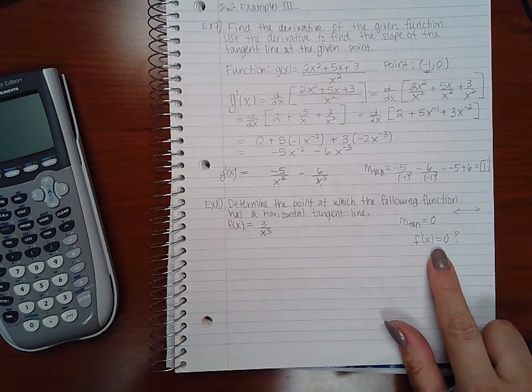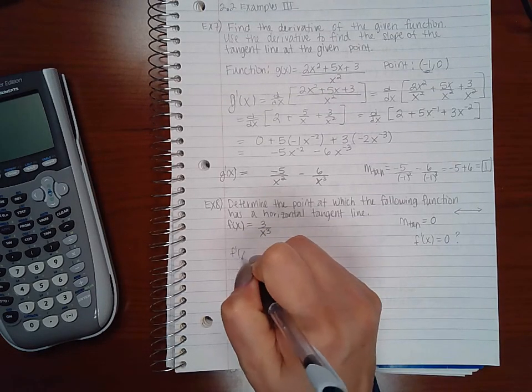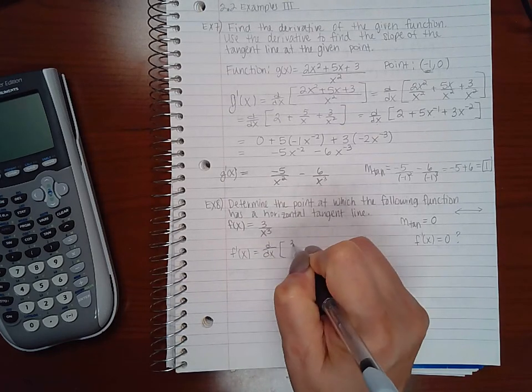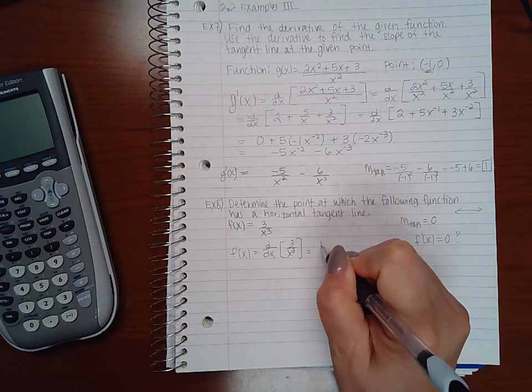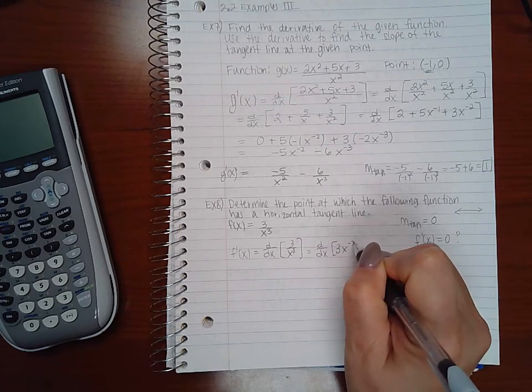Well, to figure that out, we first have to find f prime. So let's go ahead and do f prime of x, which means take the derivative of this expression here. And to do that, I'm going to rewrite it as 3x to the negative 3.